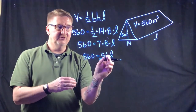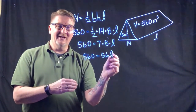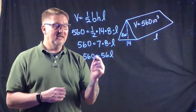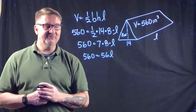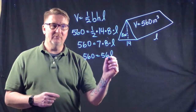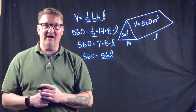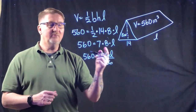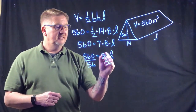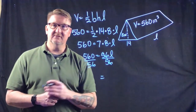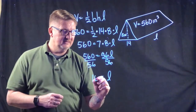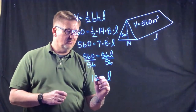Now I have a one-step equation. 56 is the coefficient and L is the variable — a number next to a variable means multiplication. To isolate L, I divide both sides by 56. 56 over 56 simplifies to 1, so 1 times L is just L. 560 divided by 56 equals 10.